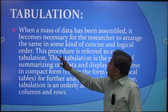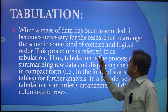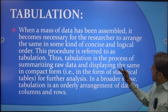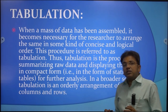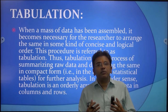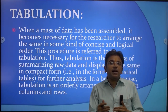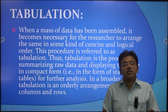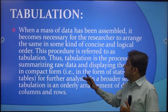Now tabulation. When a mass of data has been assembled, it becomes necessary for the researcher to arrange it in some kind of concise and logical order. This procedure is referred to as tabulation. Tabulation is the process of summarizing raw data and displaying it in compact form. We have a large number of data points and we compact that data into similar, simpler forms. Tables are the best way to represent data to the audience — people who are directly or indirectly connected with the research study.